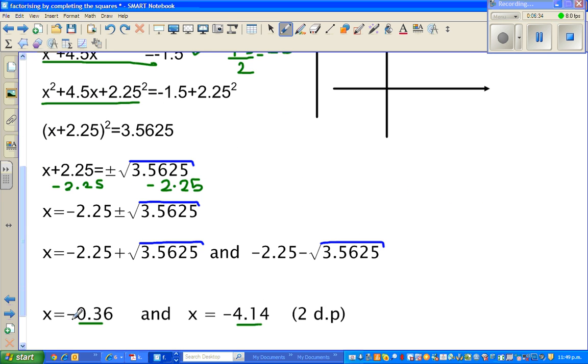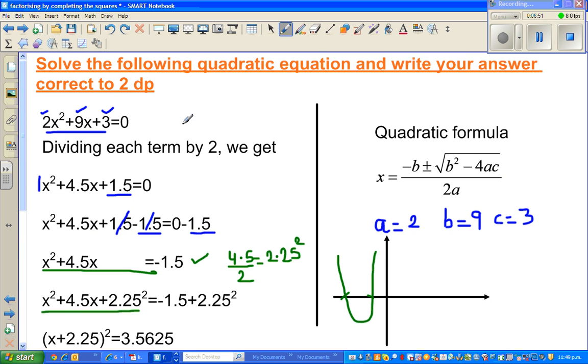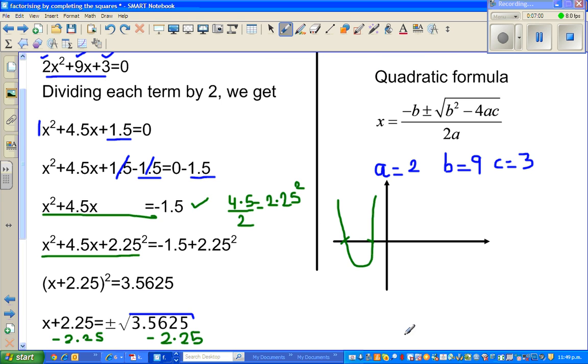Let me sketch a parabola. This is my y-axis, this is my x-axis. The roots are -0.36 and -4.14. The question is, when does this parabola become zero? This parabola becomes zero when it hits the x-axis.